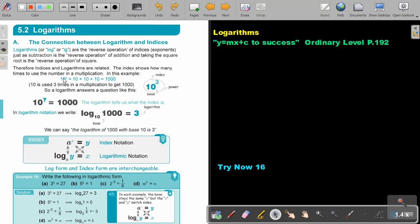The index shows how many times to use the number in multiplication. In this example, 10 to the power 3, it's 3 times that I use 10. 10 times 10 times 10, which is a thousand. So logarithm answers a question like this: 10 to the power of what is a thousand? The logarithm tells us what the index is. It helps us to find that 3.